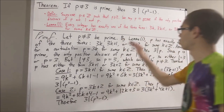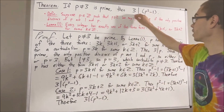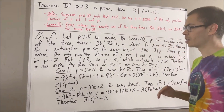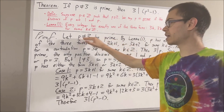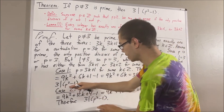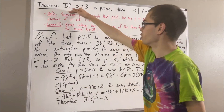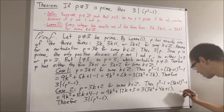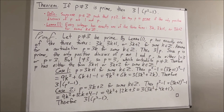Again, that's what we wanted to show. So we see that in either case, 3 is a divisor of p squared minus 1, so this must be true. Putting this all together, we see that under the assumption that p is a prime number not equal to 3, we have that 3 is in fact a divisor of p squared minus 1. So we have proven this statement, and this completes the proof.